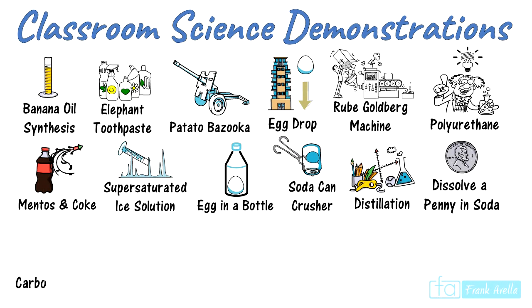The carbon snake is a chemistry demonstration of a very fast and violent reaction: the dehydration of sugar. In a beaker, fill it halfway with sugar, add sulfuric acid, and watch the black snake grow.